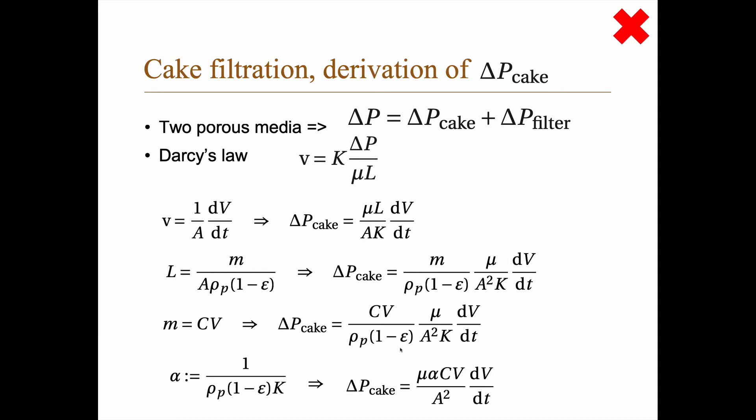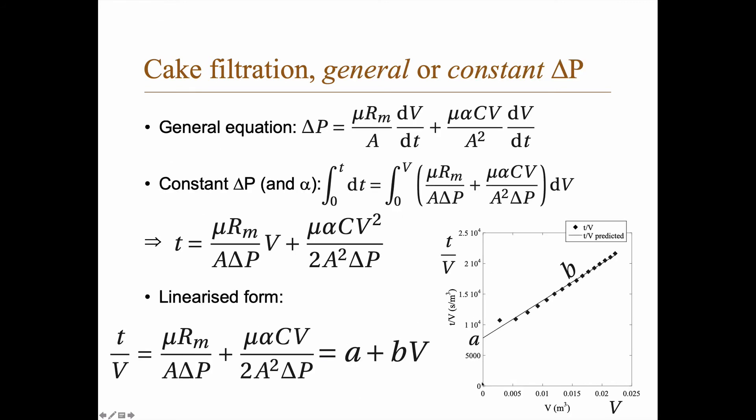So we're almost done. Now we introduce alpha, which we will call the filtration resistance. And we introduce that as 1 divided by the density of the particle, 1 minus the porosity and then the permeability K in Darcy's law. And if we put that in, then we get the filtration equation here. Delta P cake equals the viscosity times the filtration resistance times the concentration times the volume divided by A squared and then dV dt.